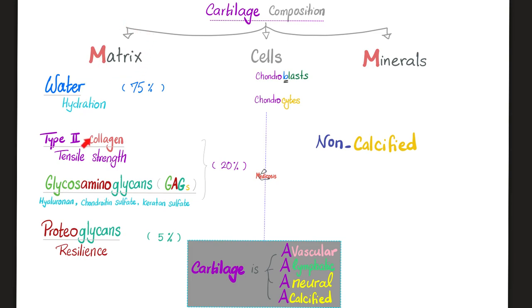The matrix contains water, type 2 collagen, glycosaminoglycans — such as hyaluronan, chondroitin sulfate, keratin sulfate — and proteoglycans.